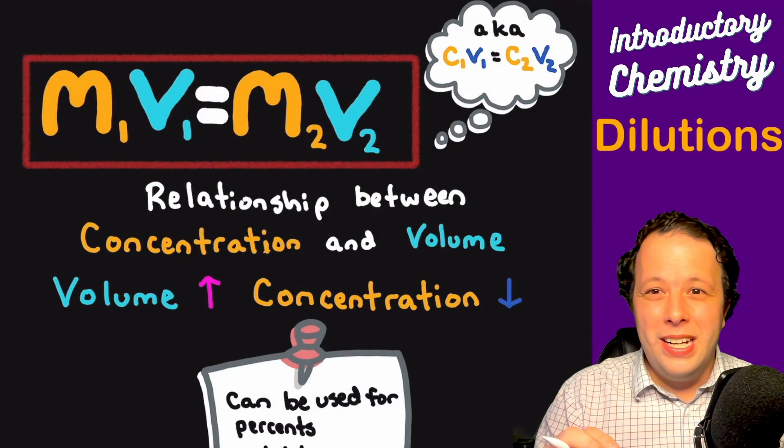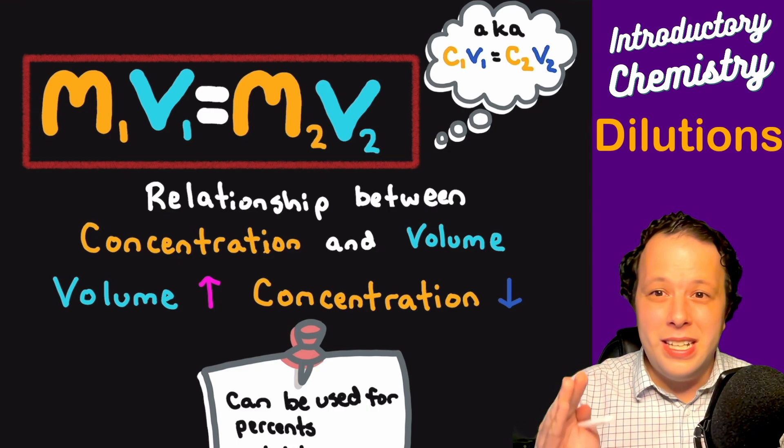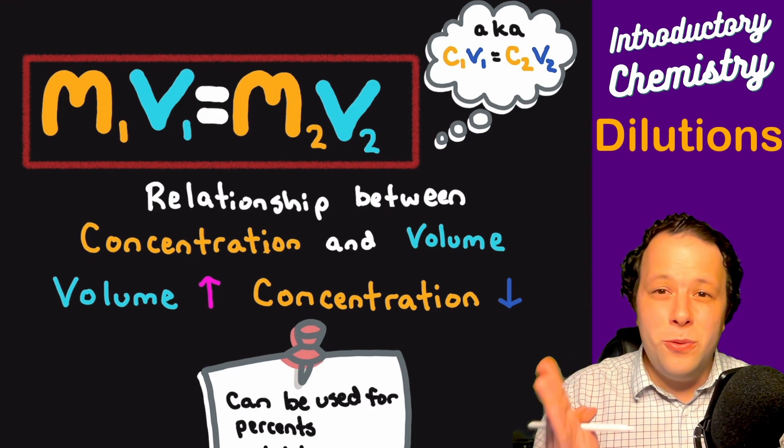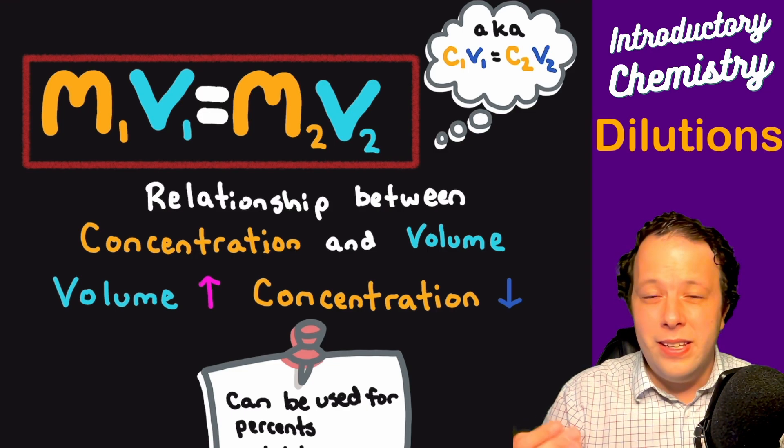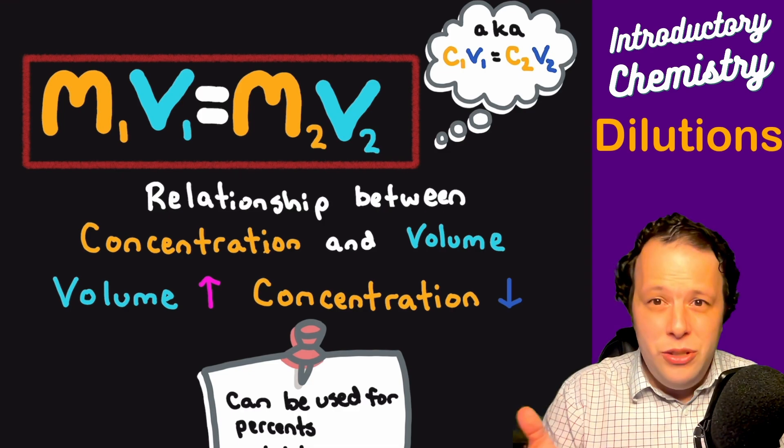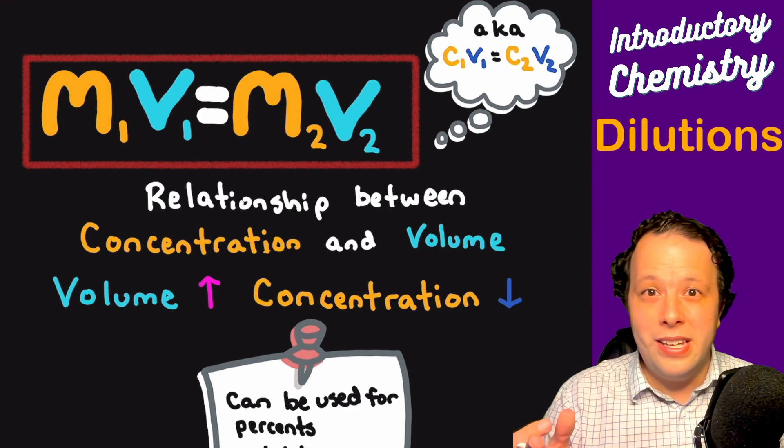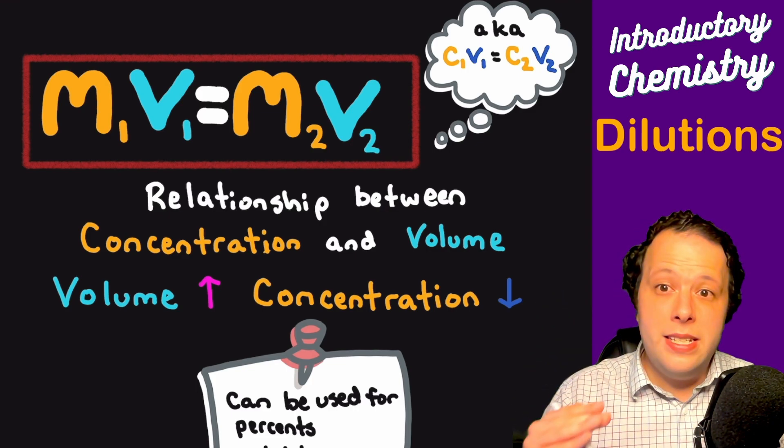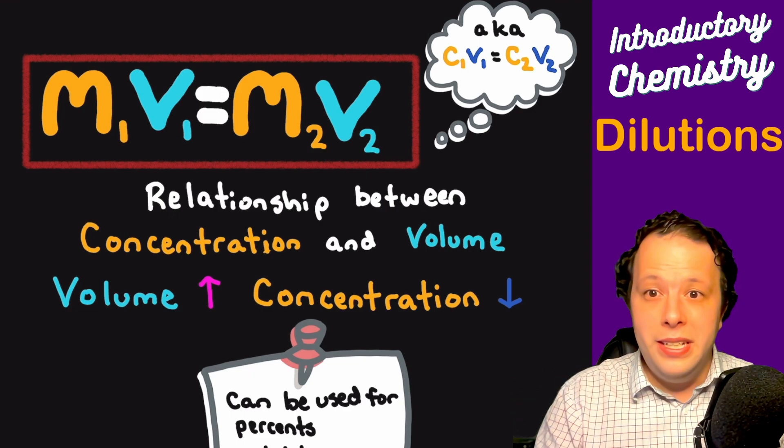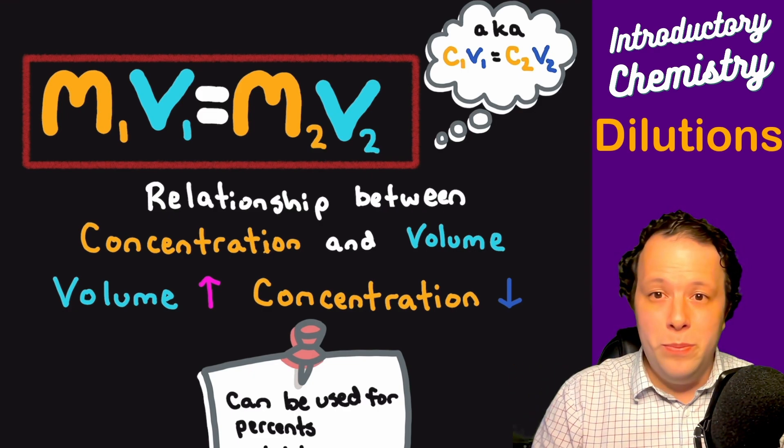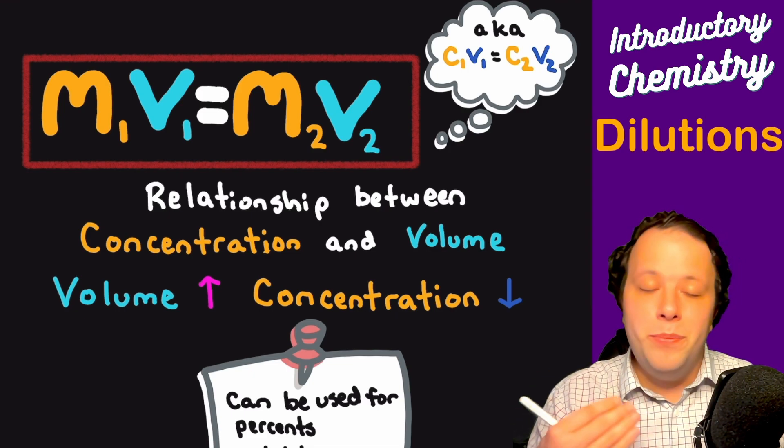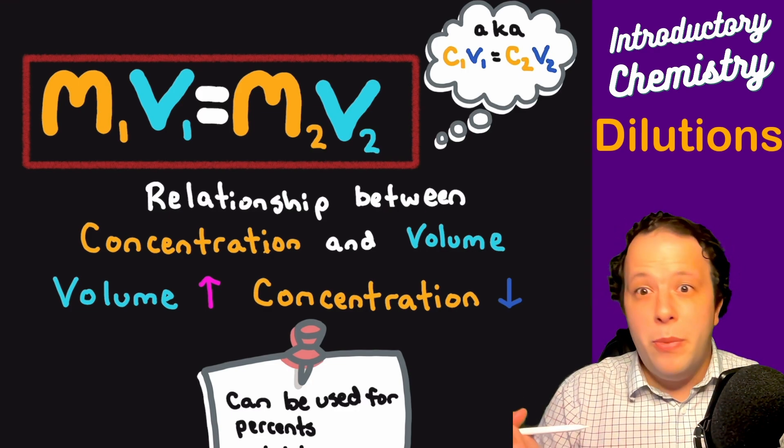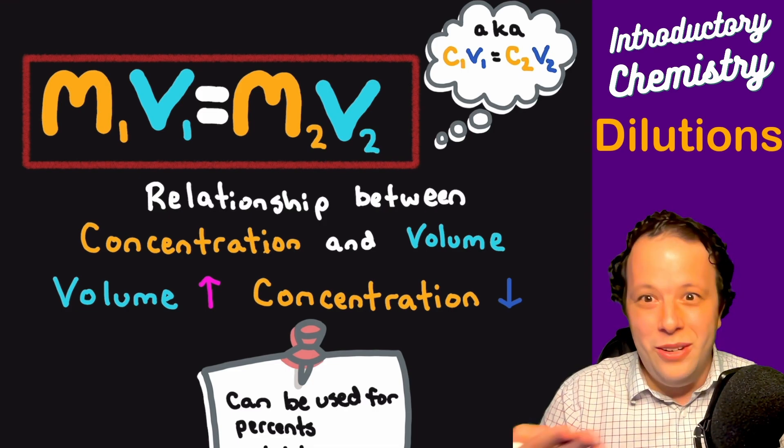When we're looking at M1V1 equals M2V2, as you may have realized, this is a relationship between concentration and volume. M is usually representing molarity, meaning that's the most common concentration used in chemistry. However, you might have also seen the version C1V1 equals C2V2. Both formulas are identical because they are an inverse relationship, meaning that as volume goes up, concentration goes down.